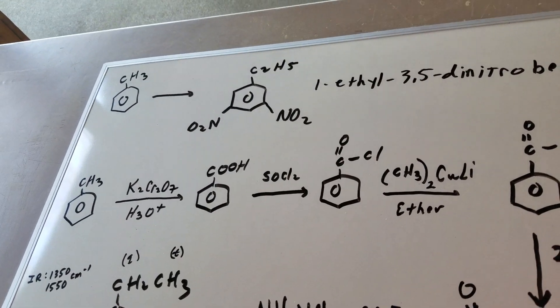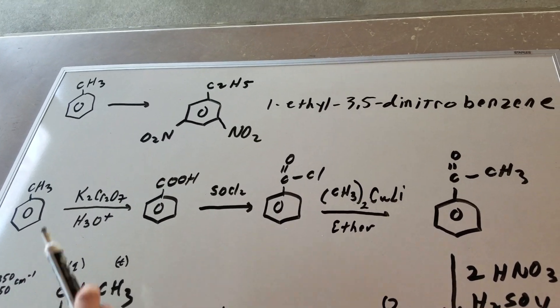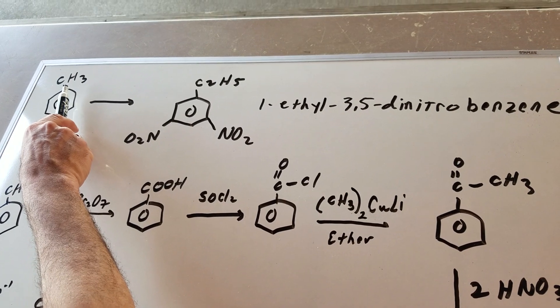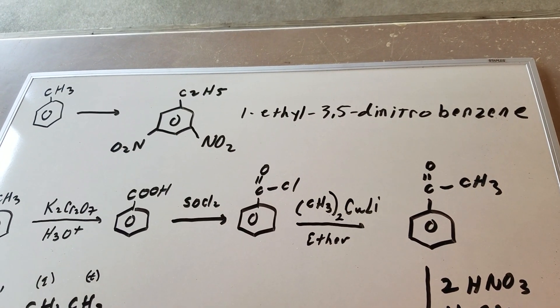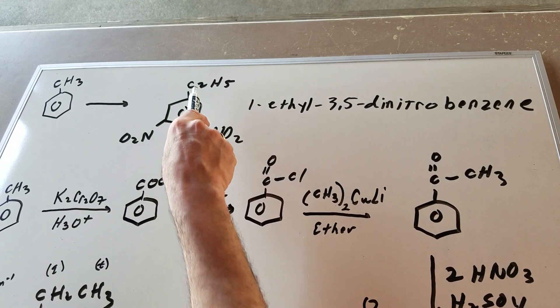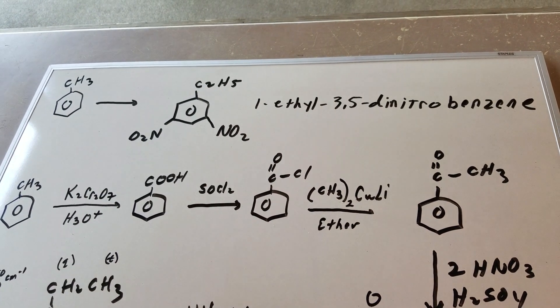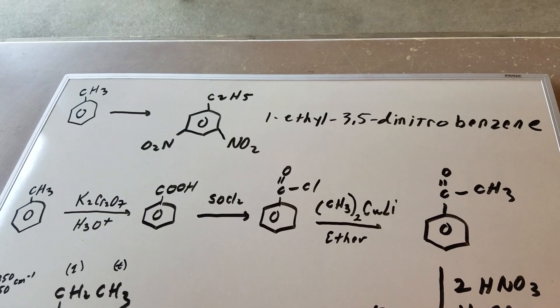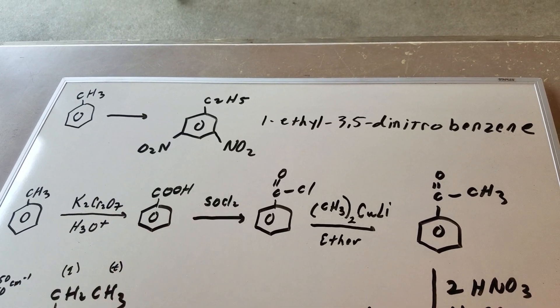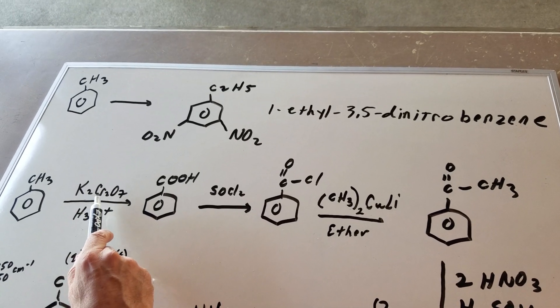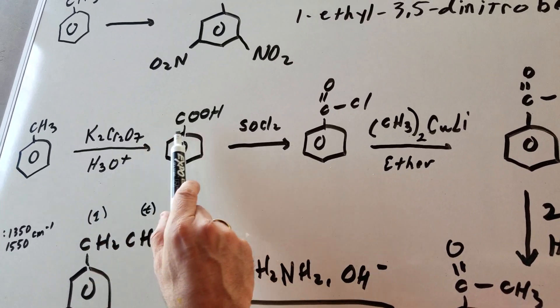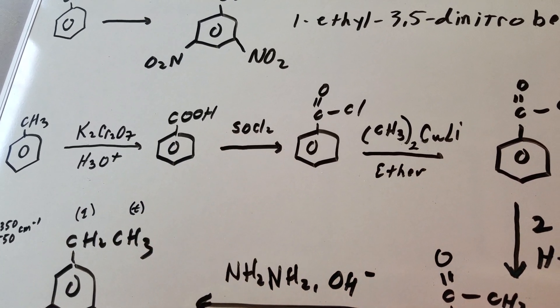What I want to do here is address two things. The first thing, we have to build on a carbon because we want a methyl to go to an ethyl. And secondly, we have to have all the groups meta to each other. So it's obvious that the first thing we have to do is to get a meta director on this ring. And we have an ortho-para director on the ring. So what I'm going to do is to take toluene and oxidize it with potassium dichromate till we get to the benzoic acid.